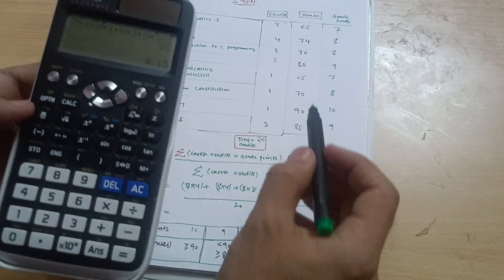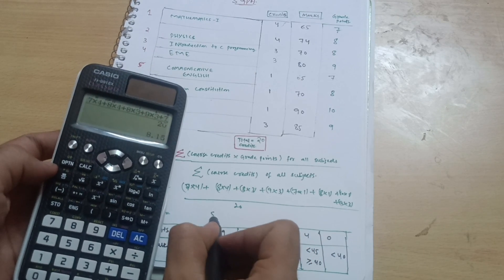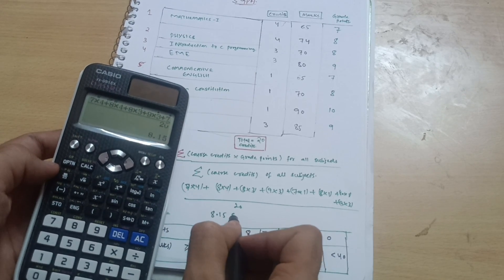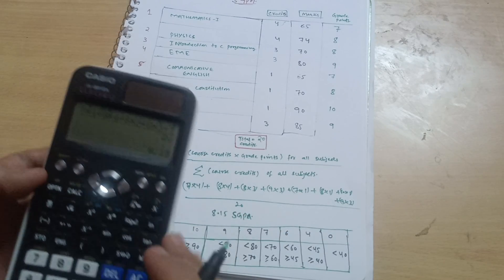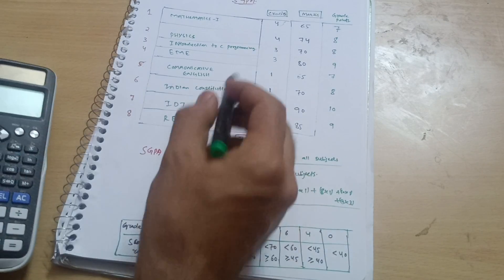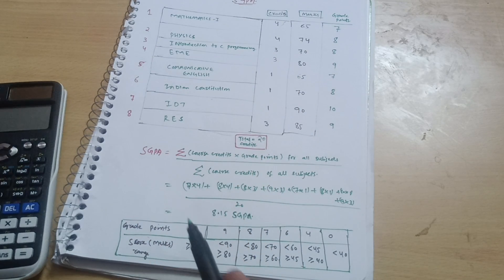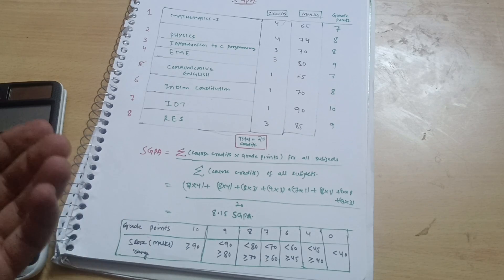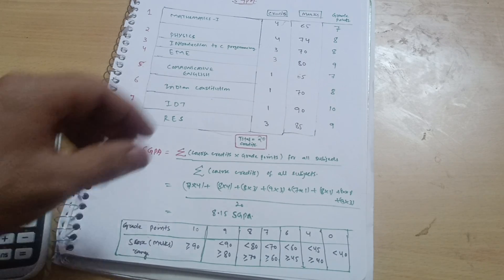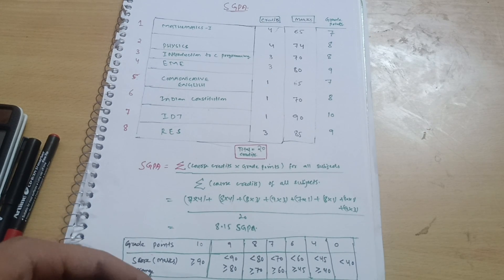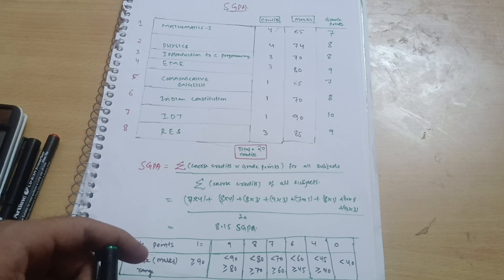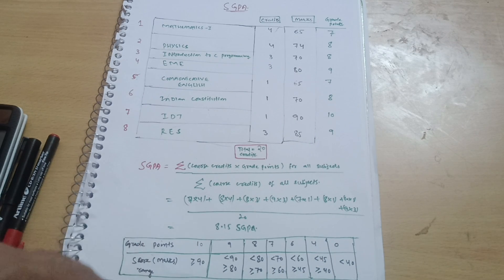So if anybody has this type of marks, they have got an SGPA of 8.15 — Semester Grade Point Average. Likewise, you have to calculate for each subject. If you have C cycle, take the credits as mentioned in your syllabus. There are 20 credits in each semester — first and second semester both have 20 credit points. I hope you have understood how to calculate SGPA. If you have any doubts, ask in the comment section. Thank you so much for watching.